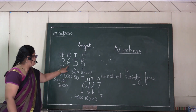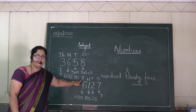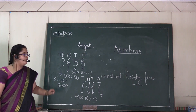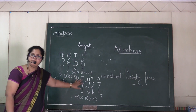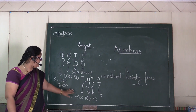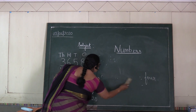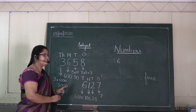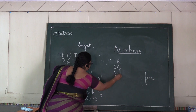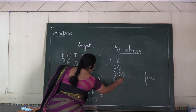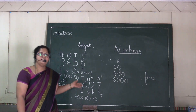If you see here, six is in hundreds place, value is six hundred. Here, six is in thousands place, value is six thousand. So place value will change according to the place. Even though both are the same digit — six — the value will change according to the place. If six is in one's place, value is six; ten's place, value is sixty; hundreds, six hundred; thousands, six thousand.